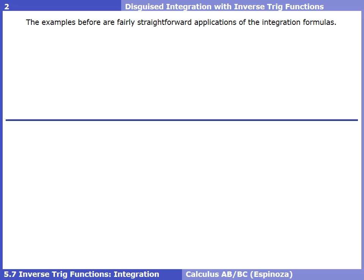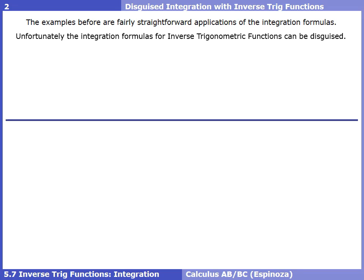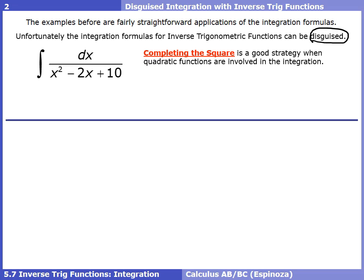Those first two examples were fairly straightforward applications of the integral formulas. Unfortunately, sometimes the inverse trig integration formulas can be disguised, like in this next case. You might look at this and say we can't simplify it, can't do a u-substitution, and it doesn't look like any of those three formulas. But the key is it's disguised — we do have one of the three inverse trig functions here, it's just hidden until we do a little algebra. The method we need to employ is completing the square.